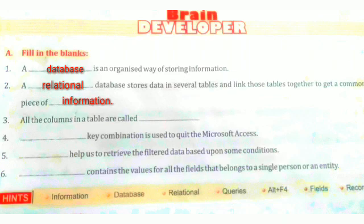Third question: all the columns in a table are called fields. As we know, all the columns in a table — what do we call them? Fields.